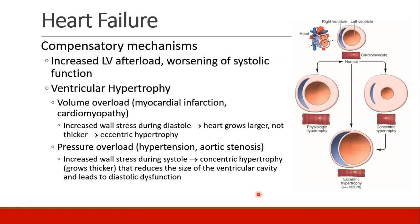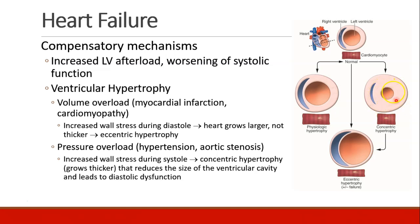Patients who have increased left ventricular afterload will have worsening systolic function, which can lead to ventricular hypertrophy. If patients have volume overload due to myocardial infarction or cardiomyopathy, this causes increased wall stress during diastole and the heart will start to grow larger but not thicker — we call this eccentric hypertrophy, where the heart is dilating.